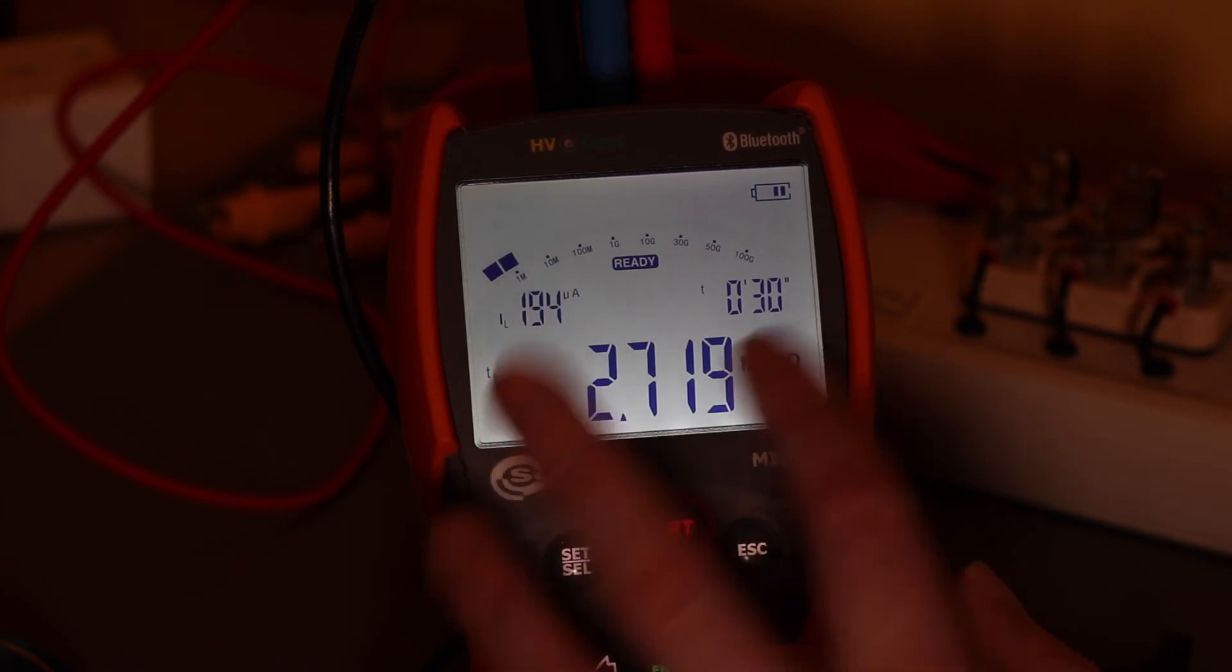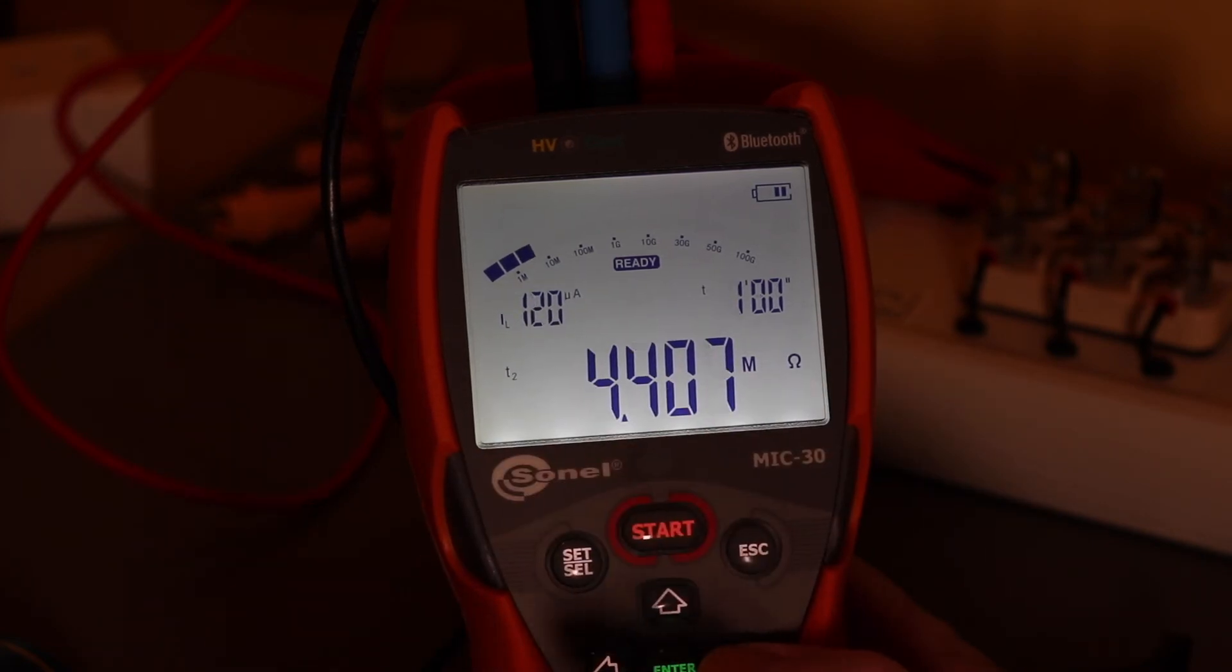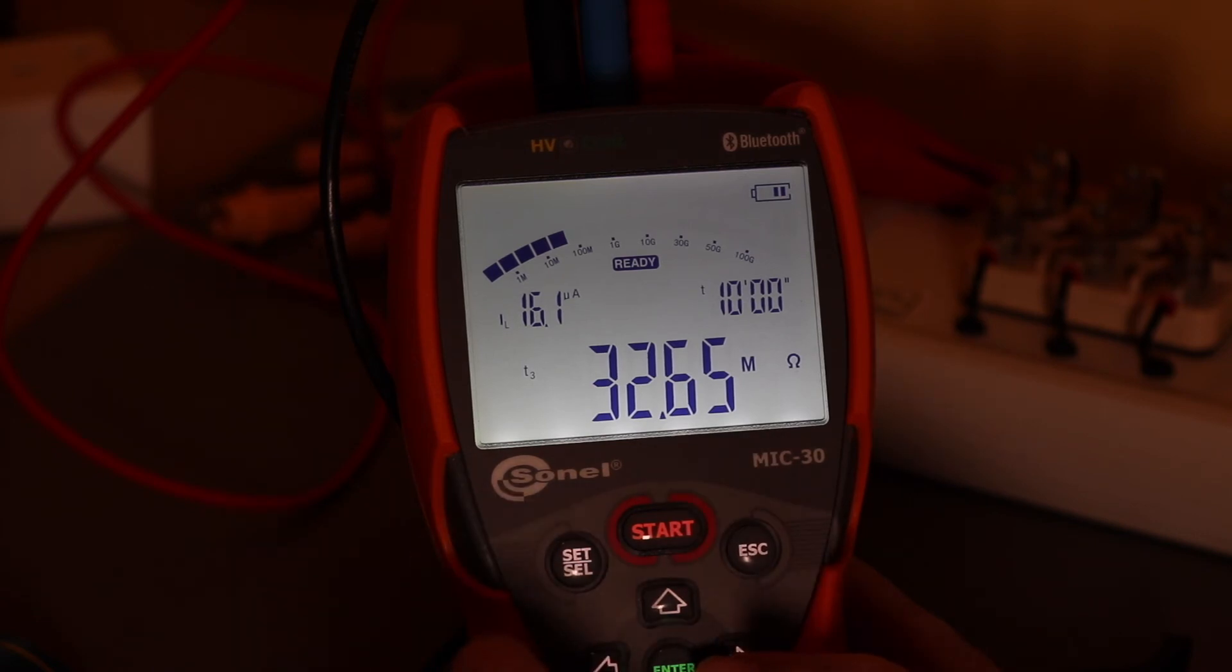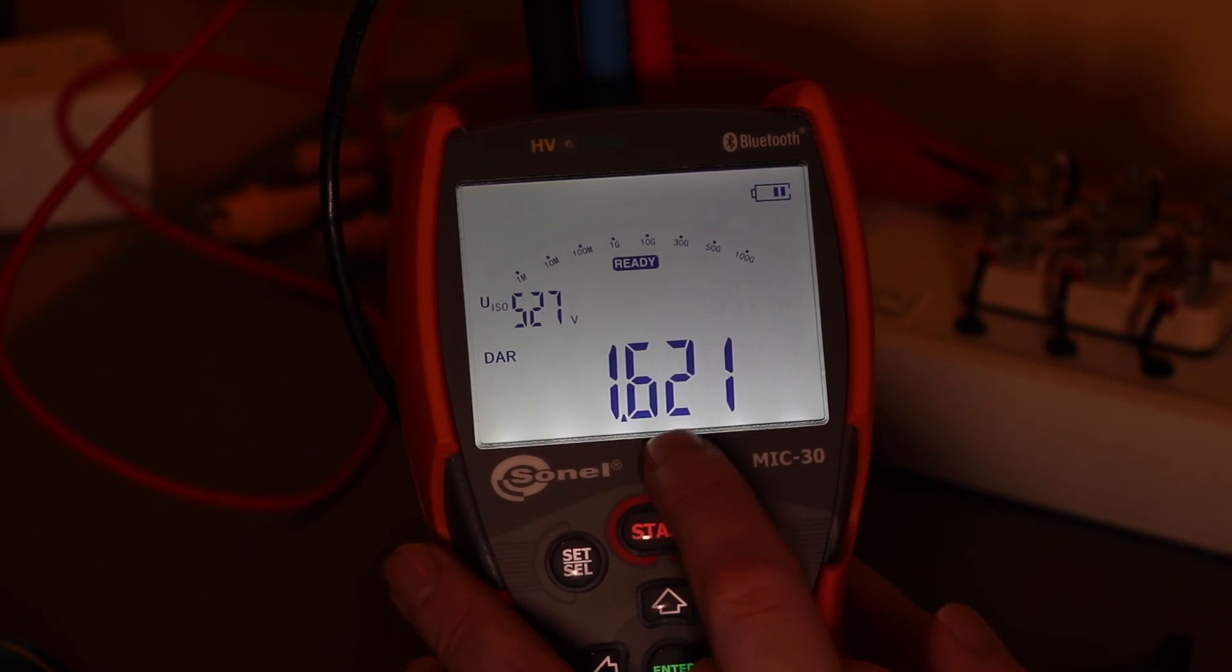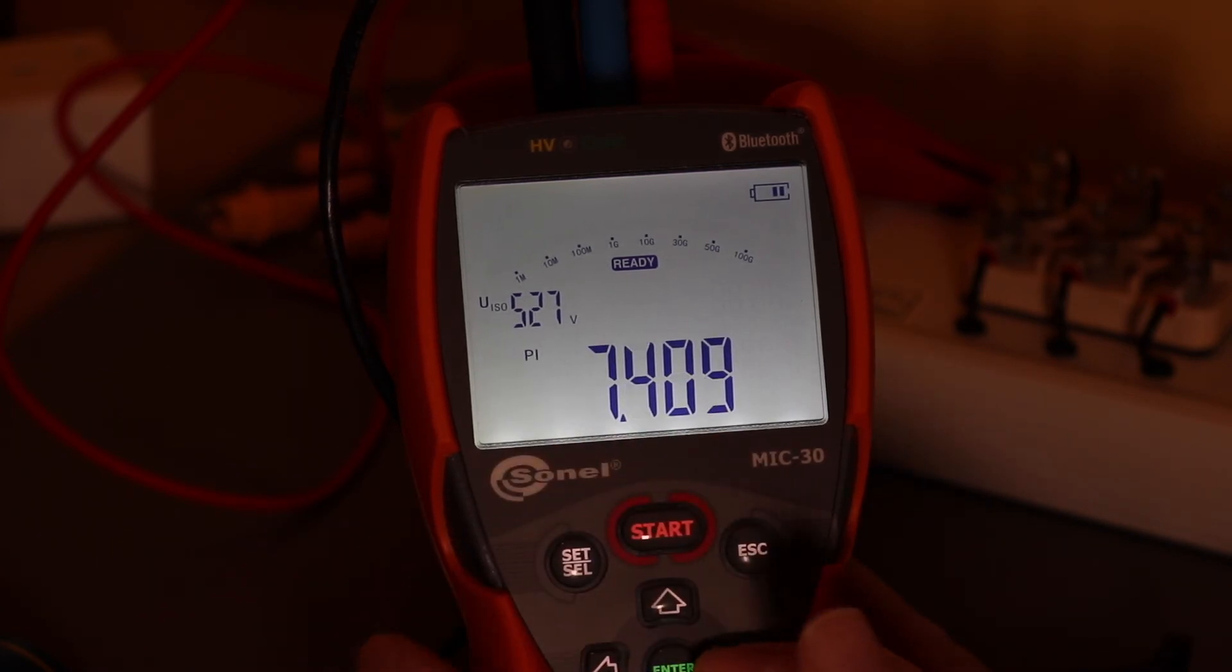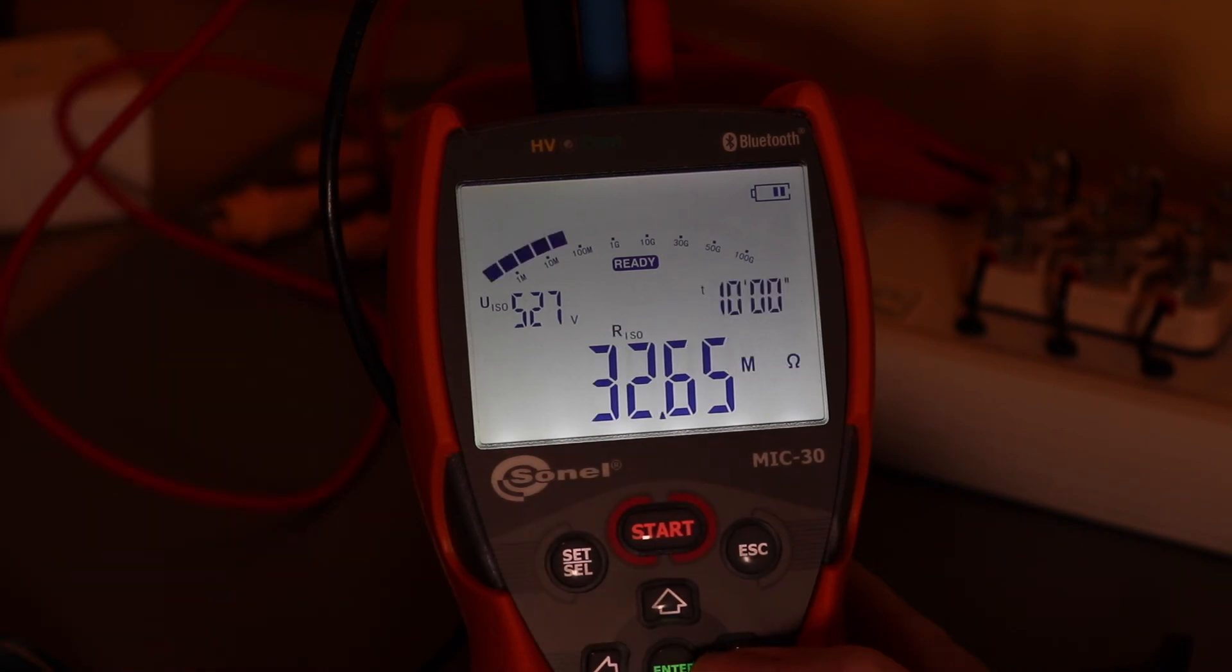You can then scroll through the various parameters that it read. There's the 30 second insulation reading. Goes up to the one minute one. And then up to the 10 minute one. And it shows you the current at each one of those. Then moves on to the absorption ratios. It knows that the 3060 is classic DAR. And then PI ratio there.